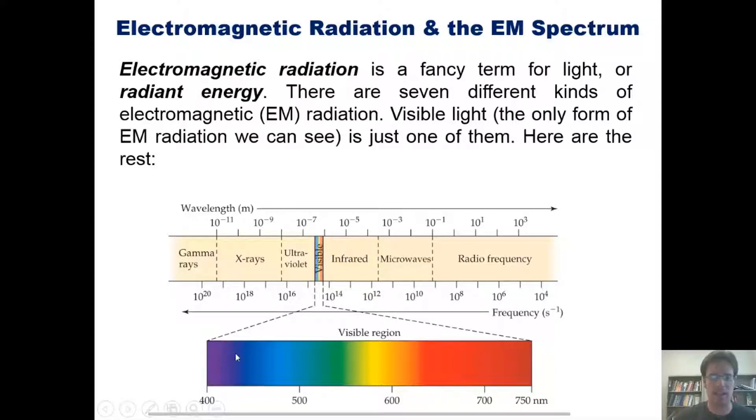Also within this narrow band, we see violet having the smallest wavelength and red having the longest wavelength. I'll explain this inverse relationship between wavelength and frequency momentarily.